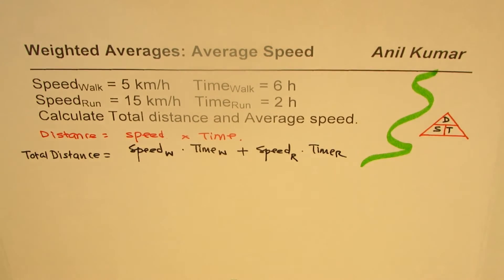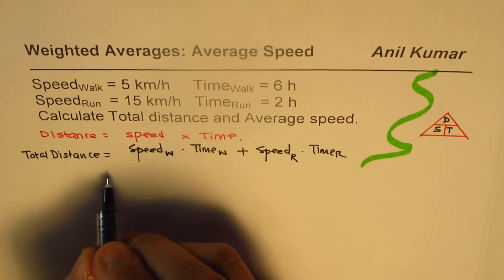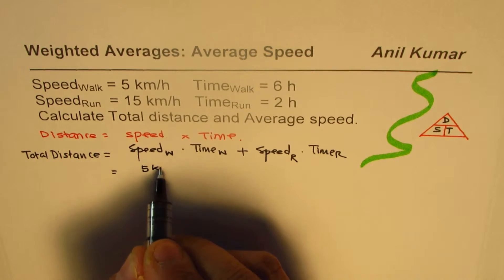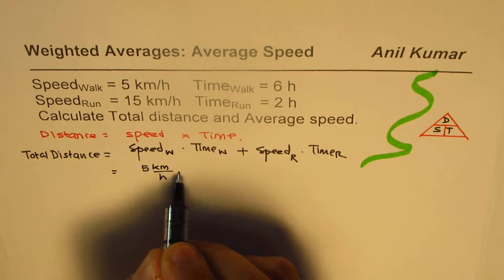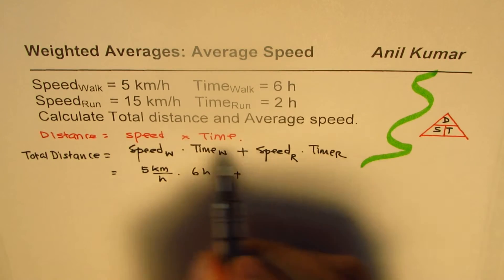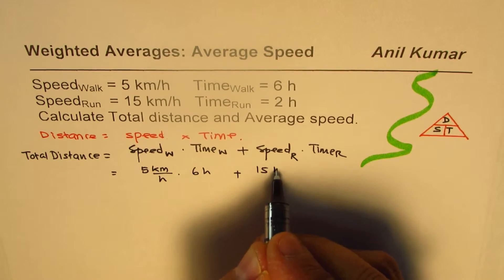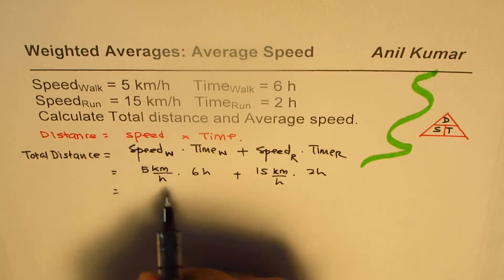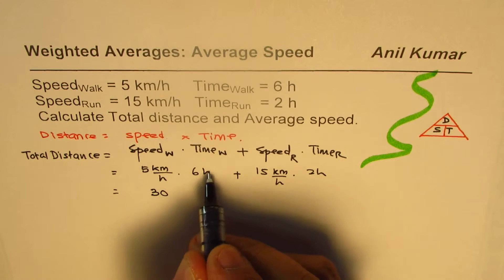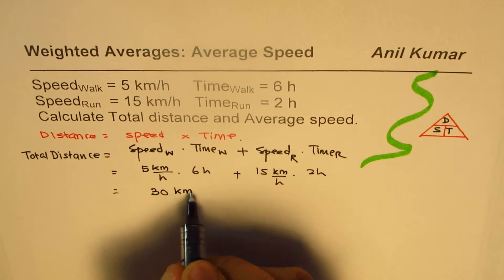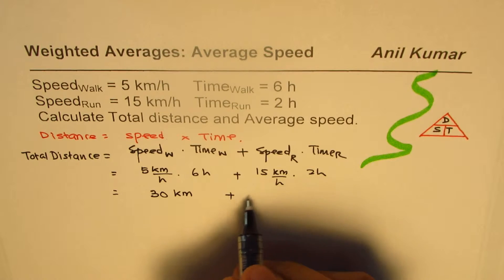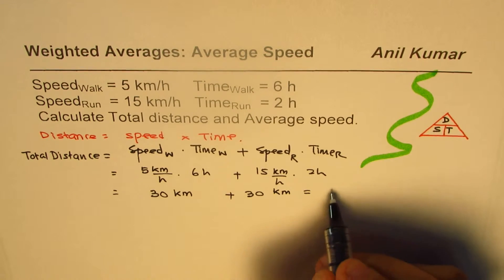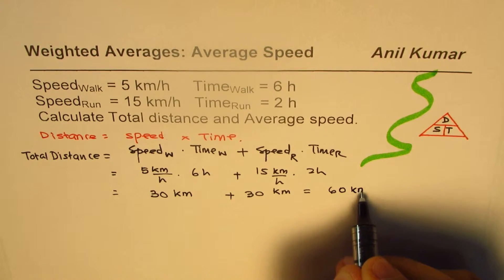Speed into time: speed is 5 kilometers per hour and the time is 6 hours, plus for running it is 15 kilometers per hour and the time is 2 hours. 6 times 5 is 30, so we get 30 kilometers. 15 times 2 is also 30 kilometers. So the total distance is 60 kilometers.